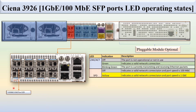This is the 100MB/1GB LED port. There are two LEDs: link/act and SPD. For link/act: if off, the port is not operational. If green, it indicates a valid network connection. If blinking green, the port is currently transmitting and receiving Ethernet packets. For SPD: if off, it indicates a valid network connection and the port speed is 100MB. If yellow, it indicates a valid network connection and the port speed is 1GB.